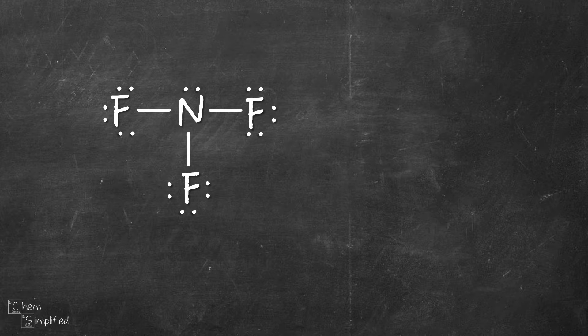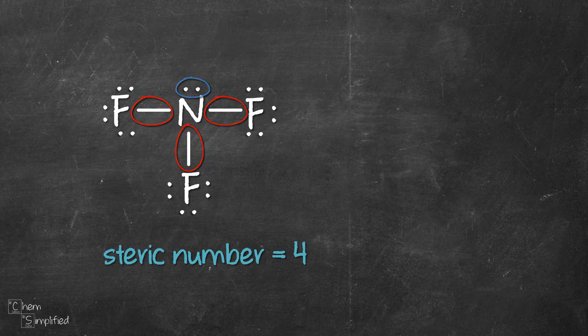Moving on, we have NF3. Central atom is nitrogen. We can see that there are actually four groups connected to it: three single bonds and one lone pair. So the steric number is 4. As mentioned, there's one lone pair on nitrogen, so lone pair is 1.